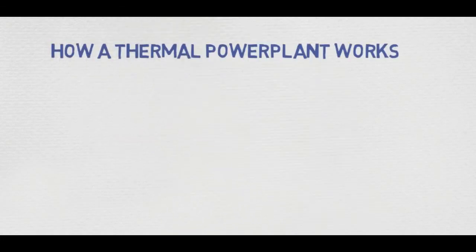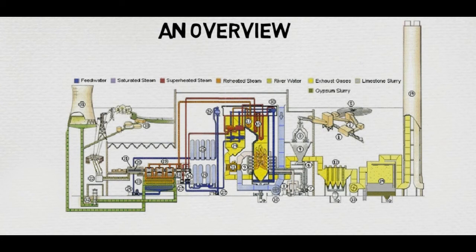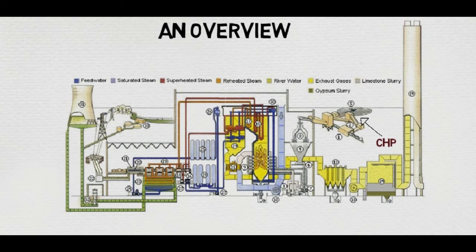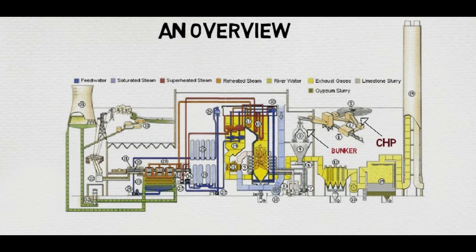How does a thermal power plant work? Let's take an overview. This part is called CHP, the coal handling plant, where coal is handled. After that, from the CHP, the coal is stored in a bunker and then sent to a mill to produce coal dust.